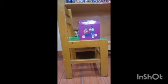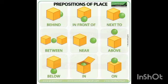Now the box is on the chair. Now you can see this picture: the ball is behind the box. In the second picture, the ball is in front of the box. In the third picture, the ball is next to the box. The fourth one is: the ball is between the boxes.